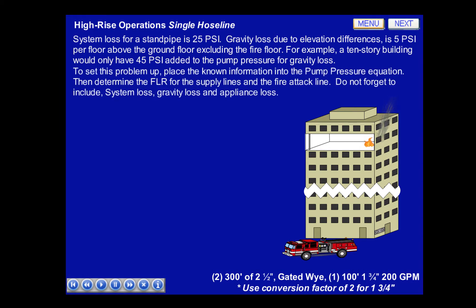To set this problem up, place the known information into the pump pressure equation. Then determine the FLR for the supply lines and the fire attack line. Do not forget to include system loss, gravity loss, and appliance loss.